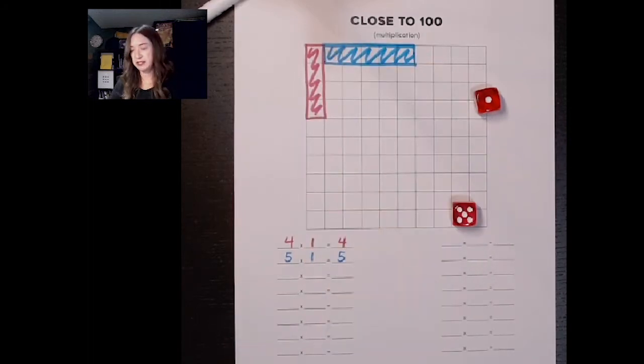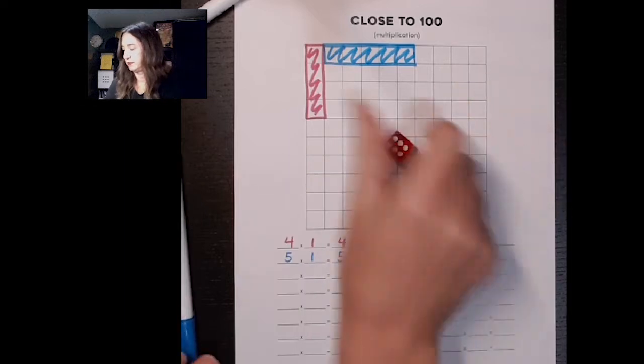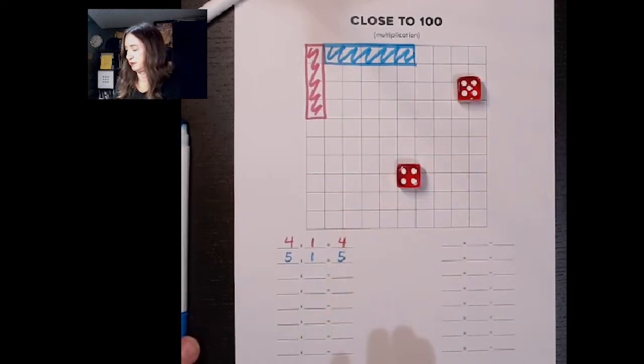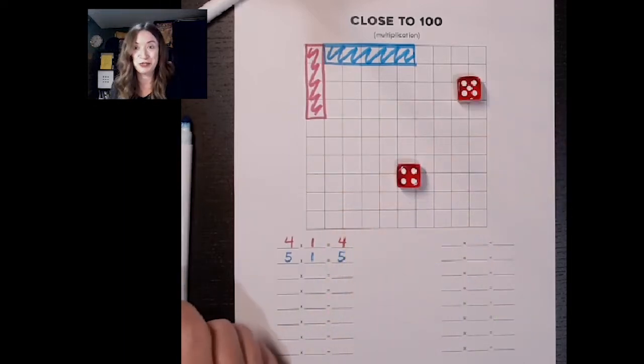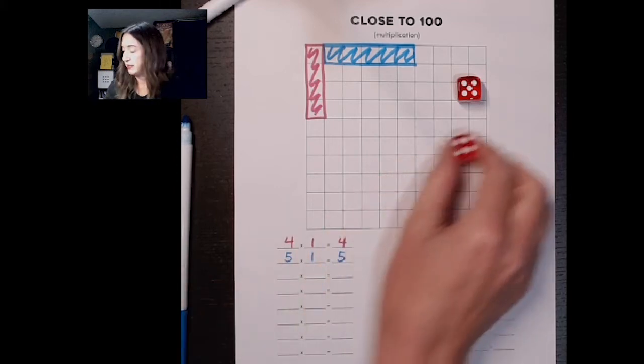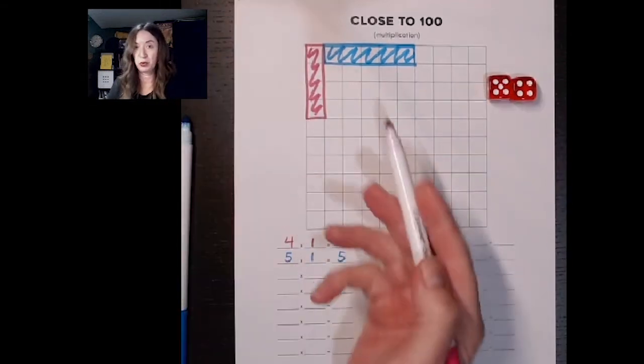Now it's pink's turn again. Ooh, 5 times 4? That's 20. So I'm going to make a 5 by 4 array.